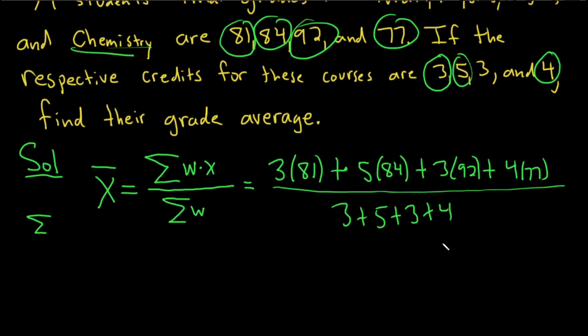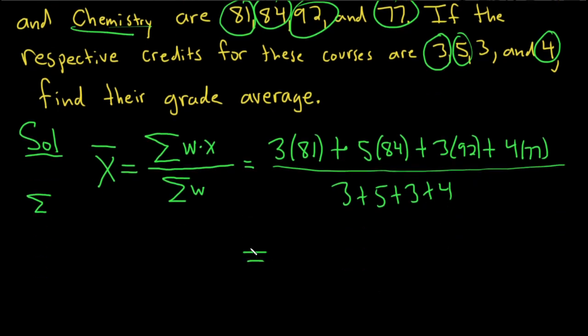Let's carefully work this out. I have not done this problem yet. I'm going to type this into my calculator and see what we get. So 3 times 81 plus 5 times 84 plus 3 times 92 plus 4 times 77. So I got 1,247.